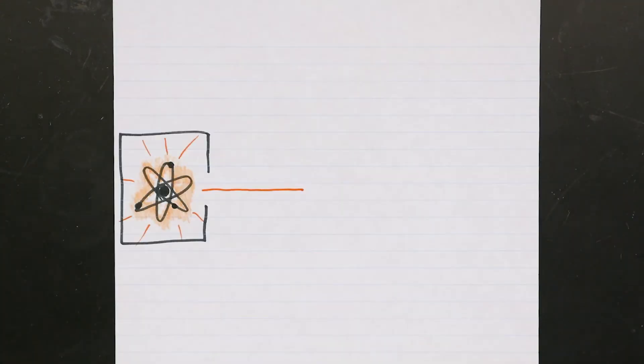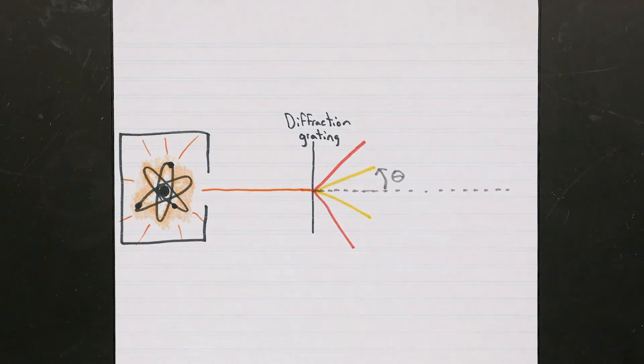So if we can induce a chemical sample of atoms to emit light, we can use a diffraction grating to look for which specific wavelengths of photons are actually emitted. The exact angle that a specific photon is diffracted is related to the wavelength of that photon by this formula.